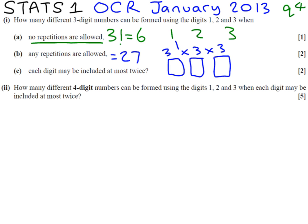Now it says each digit may be included at most twice. That means it can be included once or twice. A clever way to think about this question is you do not want it to be repeated three times. So you do not want one, one, one.